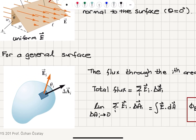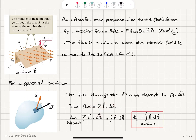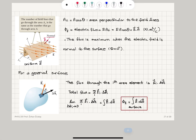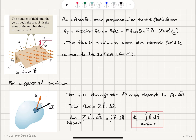How do we generalize this to an object with arbitrary shape and a non-uniform electric field? For each area element, we consider the area vector delta A_i making an angle theta_i with respect to the electric field E_i at that point. For each surface element, E_i dot delta A_i gives the flux contribution. If we add up contributions from all area elements and take the limit as delta A_i goes to zero, this turns into the integral of E dot dA. So the electric flux phi_E is the integral of E dot dA integrated over the surface.